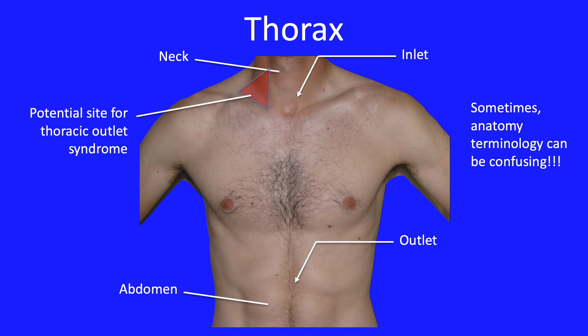In fact, the term thoracic outlet refers to a syndrome — the thoracic outlet syndrome. And if it is present in a patient, it will impact blood and nerve supply to the upper limb. Anatomists try to be consistent in their description of the body, but understand that clinical practice and history will at times supersede logical explanations.